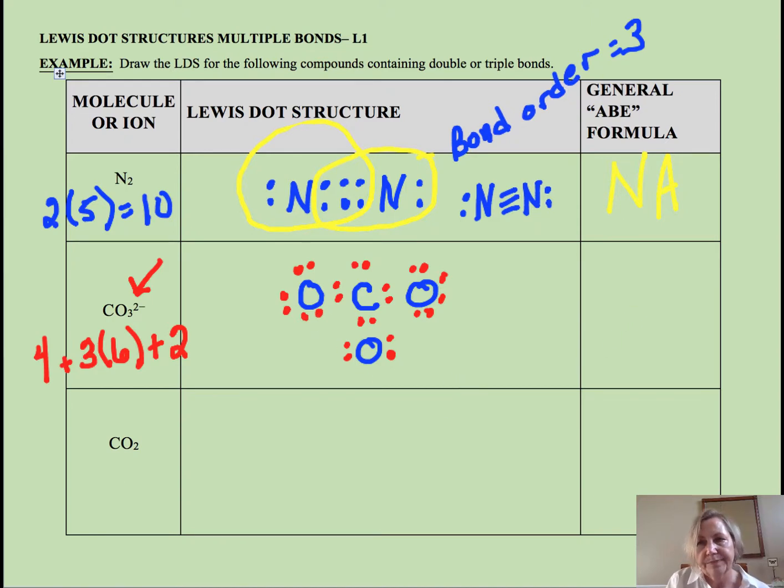Okay so problem. This oxygen on the bottom has an incomplete octet and it needs eight. So we're going to come down and take two from mama and put it between those two oxygens.